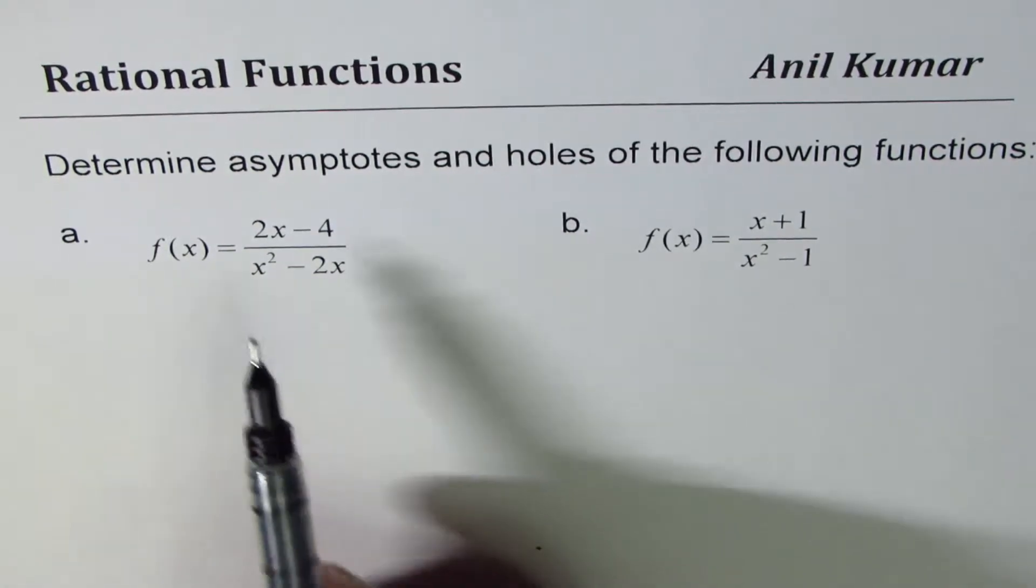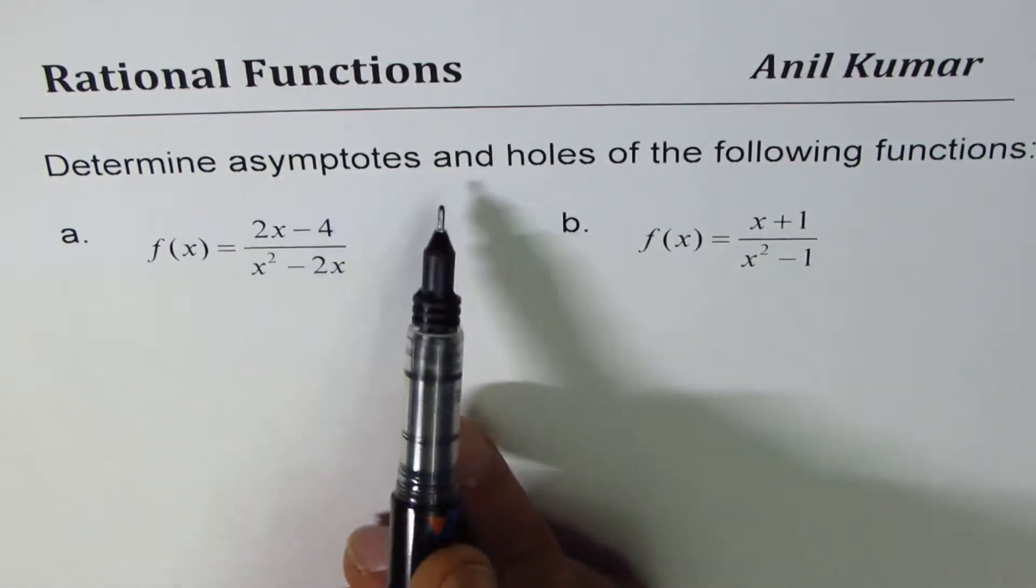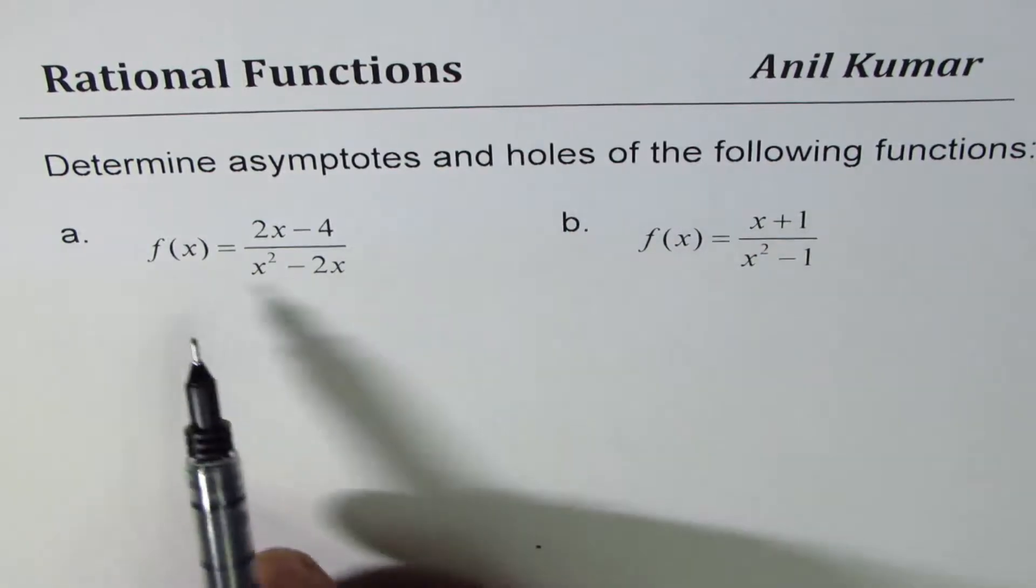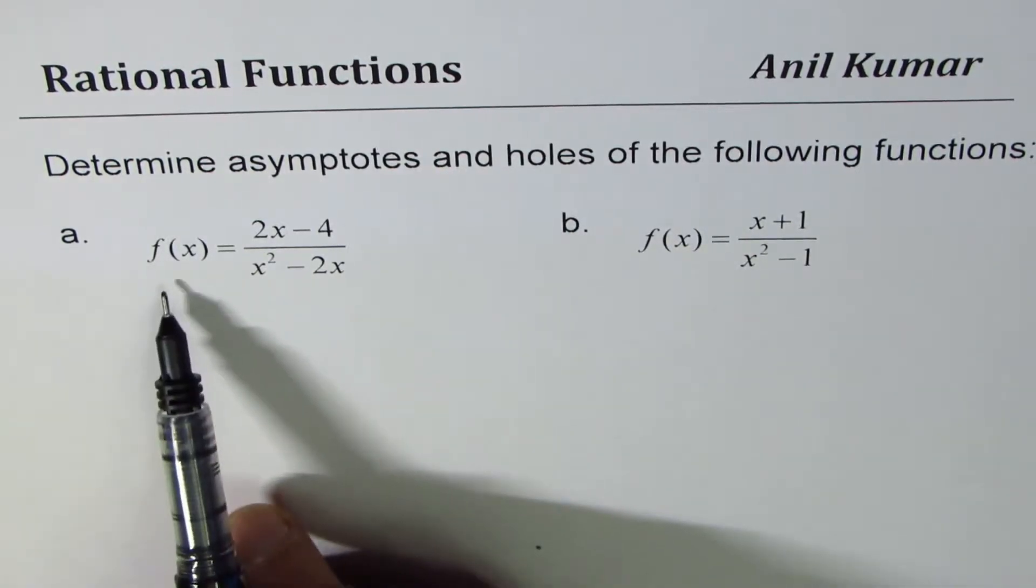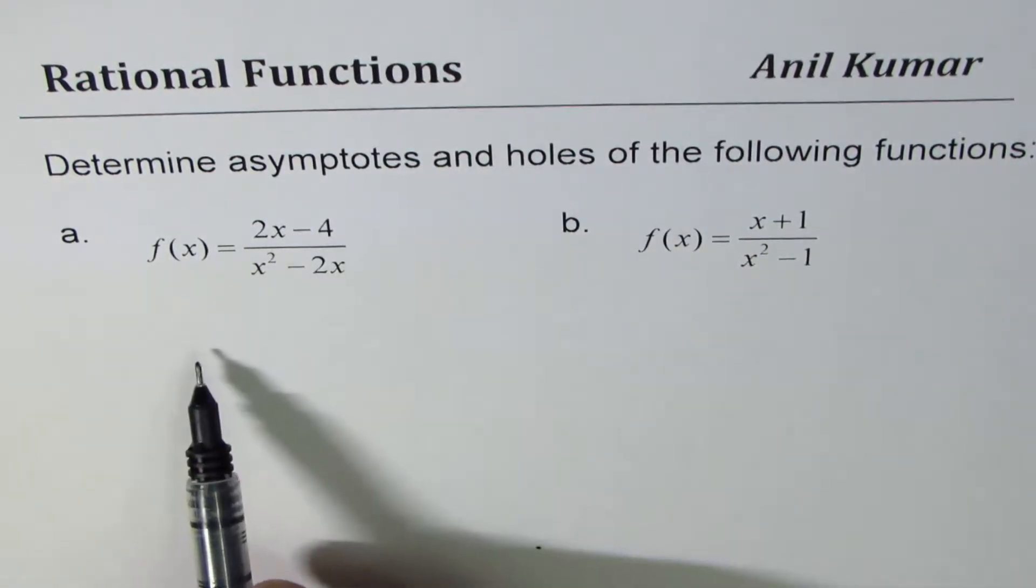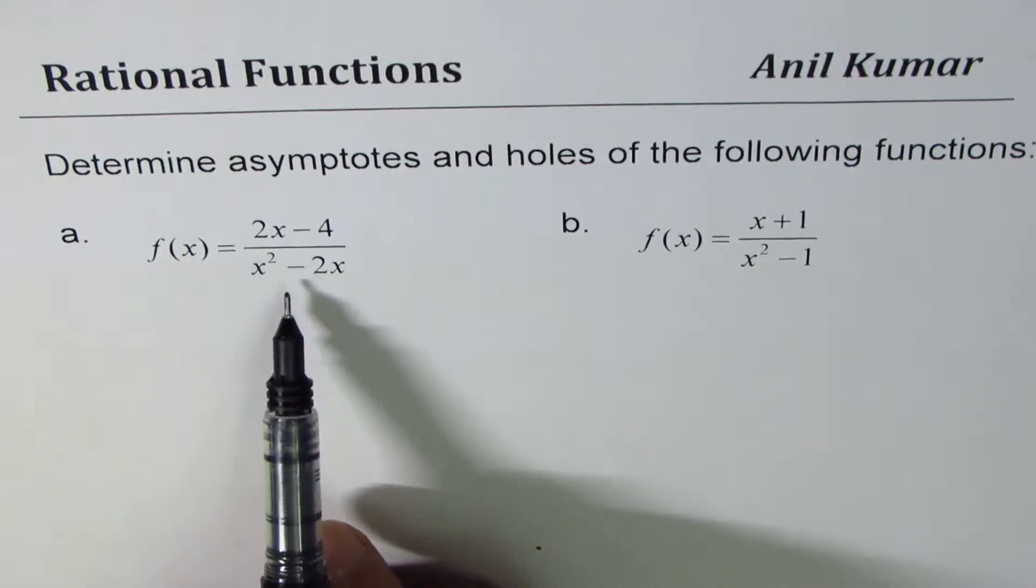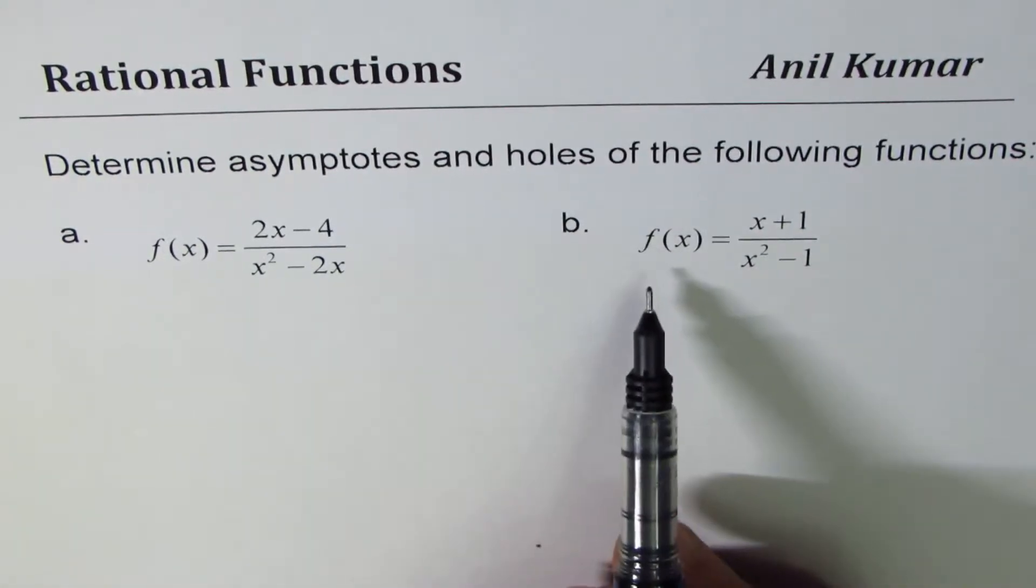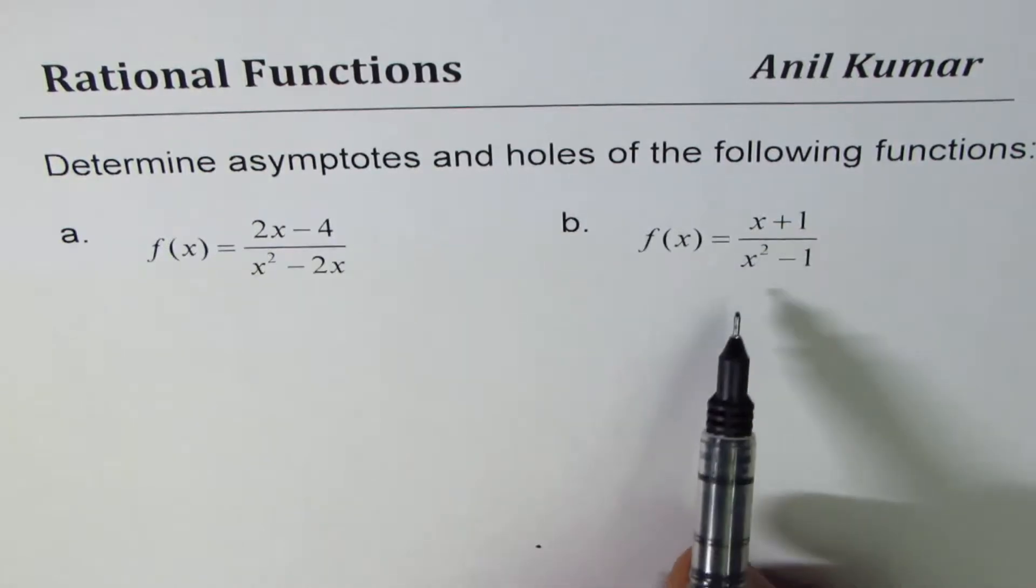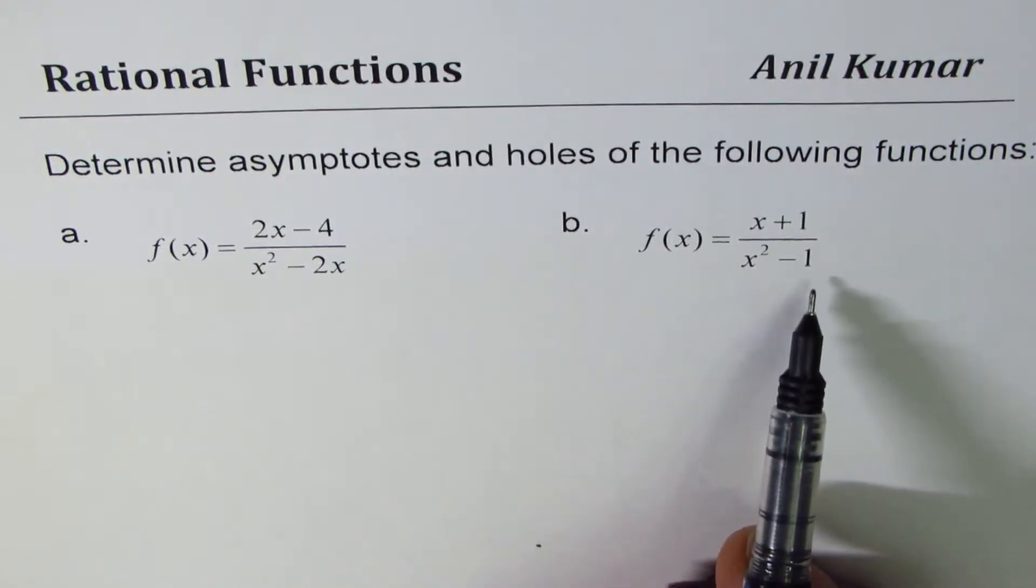The question is: determine asymptotes and holes of the following functions. First, a: f(x) equals 2x minus 4 divided by x squared minus 2x, and b: f(x) equals x plus 1 divided by x squared minus 1.